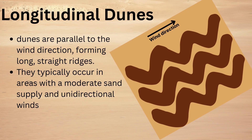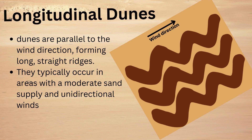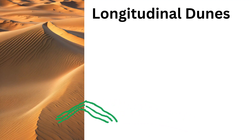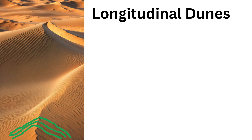Next one is longitudinal dunes. These dunes are parallel to the wind direction, forming long straight ridges. Here you can see their formation is in the wind direction. They typically occur in areas with a moderate sand supply and unidirectional wind. This type of dunes we can mostly see in the Namib desert.